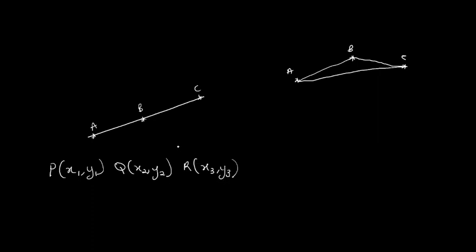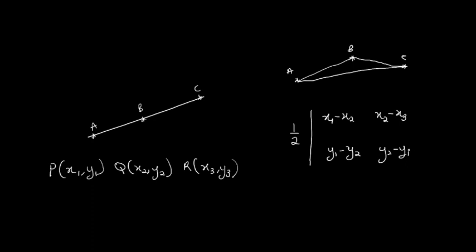Using these three points, we use the area of a triangle formula to show the three points are collinear. We do that using the formula: one-half times the determinant of the 2×2 matrix with entries [x1 minus x2, x2 minus x3] in the top row and [y1 minus y2, y2 minus y3] in the bottom row, set equal to zero. We solve this as a 2×2 determinant — multiply the leading diagonal and subtract the other diagonal — then multiply by one-half. If the result is zero, the three points are collinear.